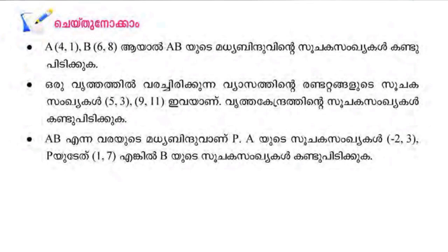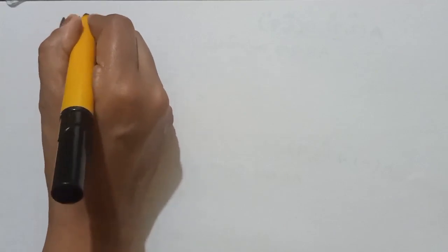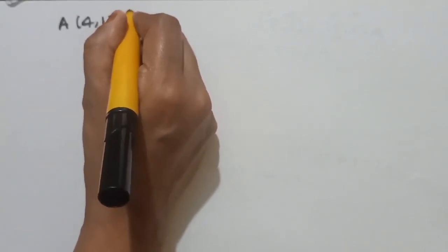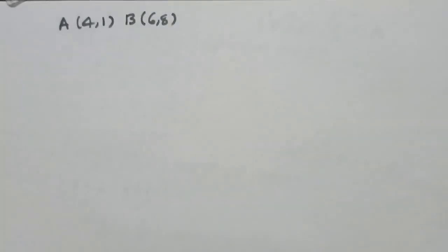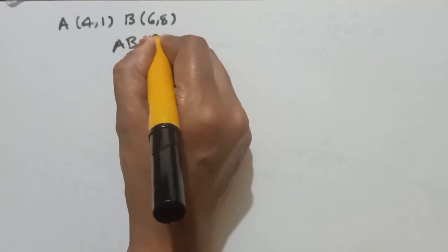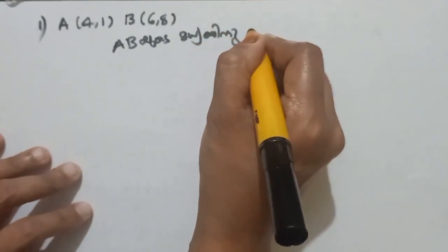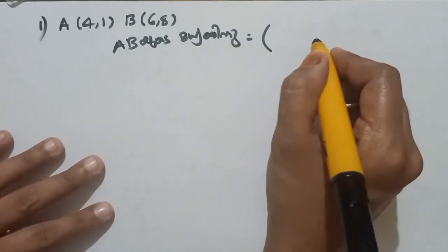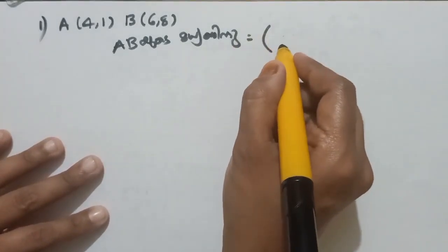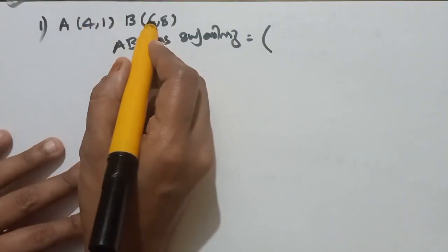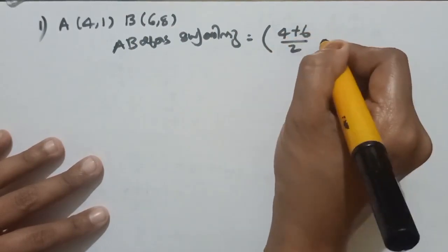We have the same problem here. A is (4, 1), B is (6, 8). We have the same problem in question 3. Applying x1 plus x2 by 2, y1 plus y2 by 2. X1 is 4, x2 is 6, and x2 plus y1 plus y2 — x2 is 8.